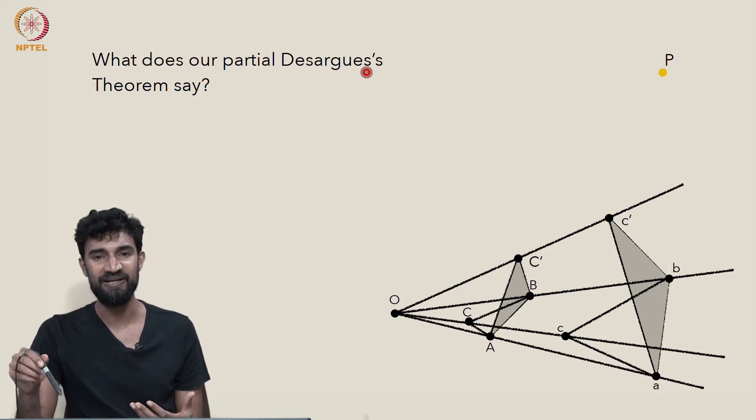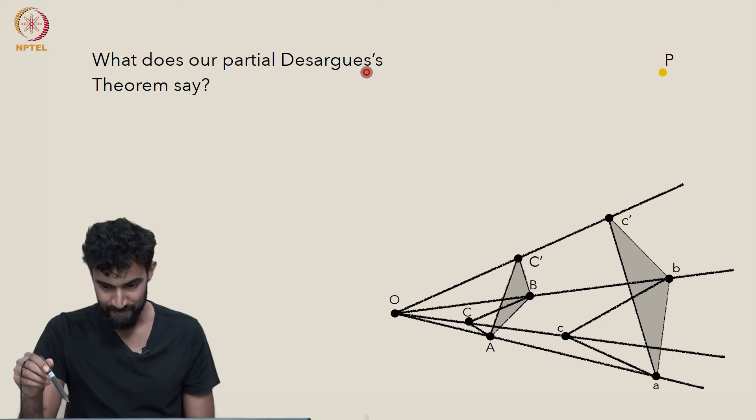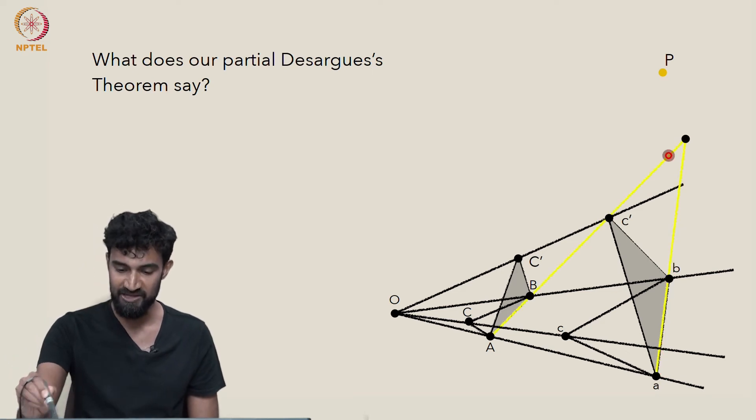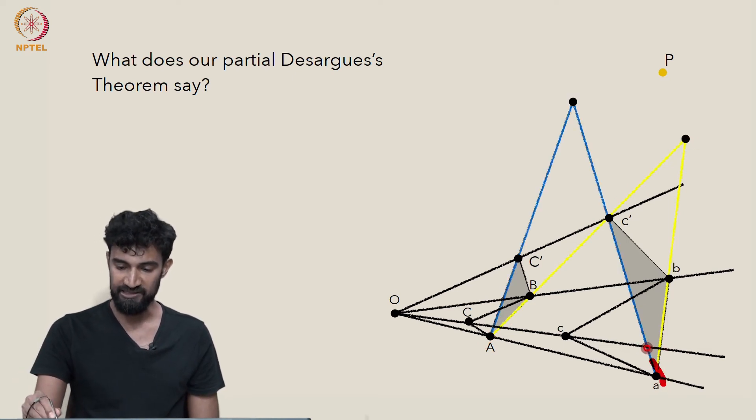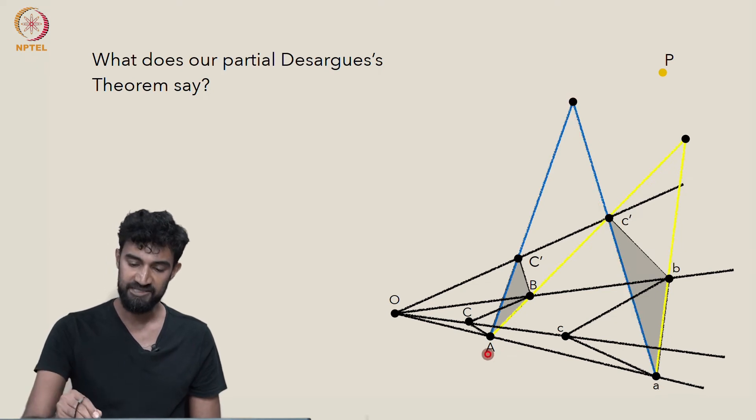Well, it says that these two triangles are in perspective from a line. In particular, little A, little B will meet capital A, capital B somewhere. Little A, little c prime will meet capital A, capital C prime somewhere.